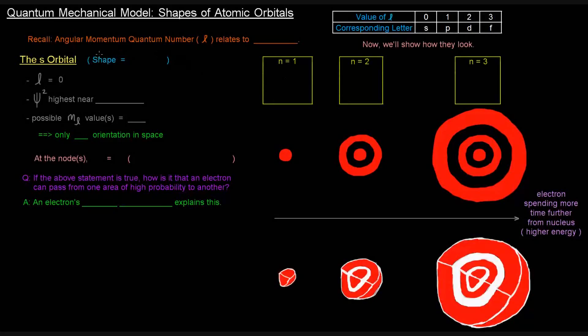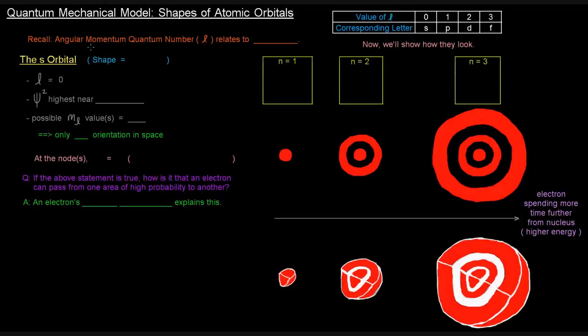In the last video, we mentioned the quantum numbers and specifically that the angular momentum quantum number L relates to the shape of the atomic orbital. We also mentioned that the values of L had a corresponding letter, and each of those letters corresponds to a certain shape.